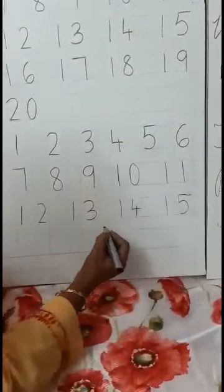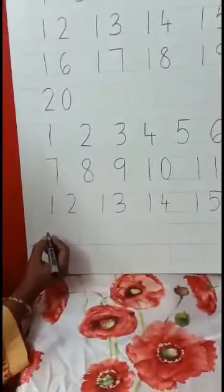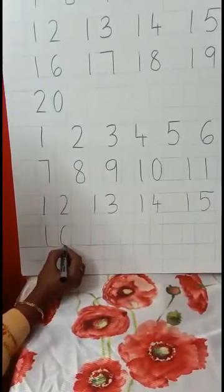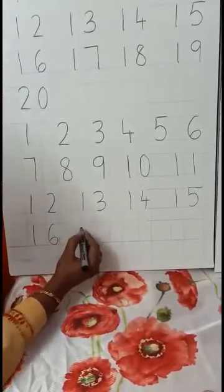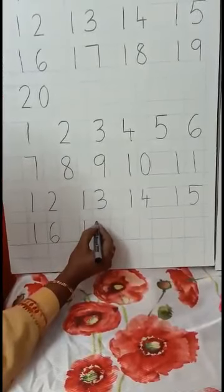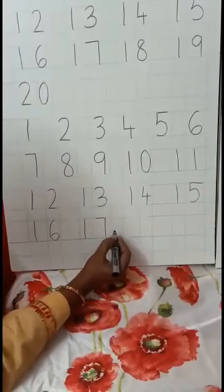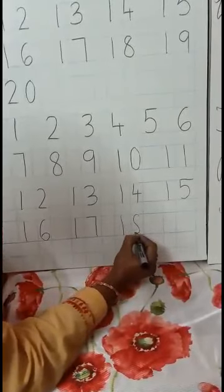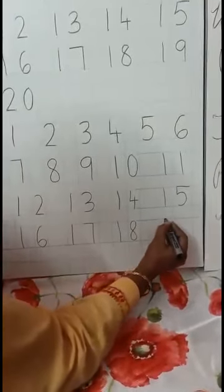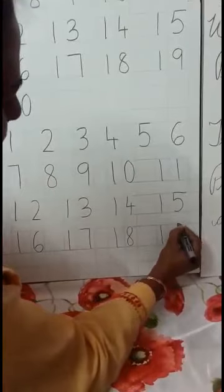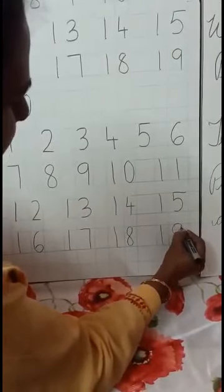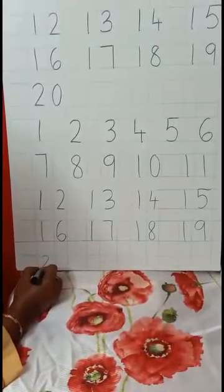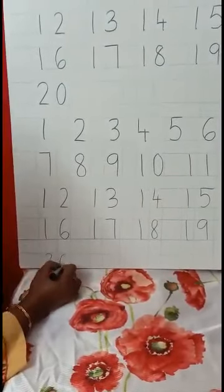Inside the blocks you will write nicely, children. Same way come down: 1, 6 — 16. Leave 1 box: 1, 7 — 17. Leave 1 box: 1, 8 — 18. Leave 1 box: 1, 9 — 19. Same way come down, leave 1 box: 2, 0 — 20.